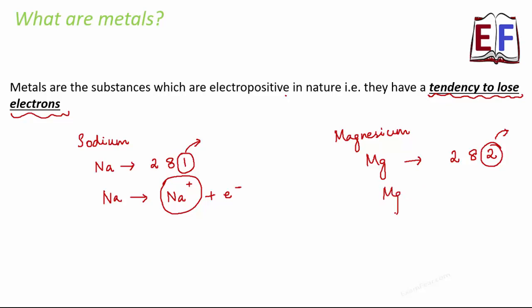Therefore, magnesium opts for losing the electrons. Magnesium becomes Mg²⁺ by losing two electrons. Here also we see that magnesium is electropositive in nature. In general, for all metals we see that they have a tendency to lose electrons, and hence we say that they are electropositive in nature.